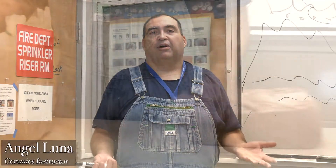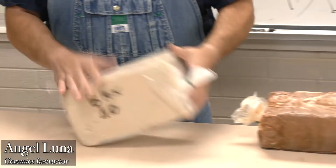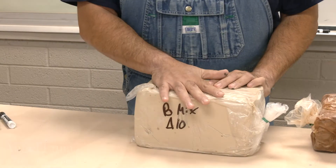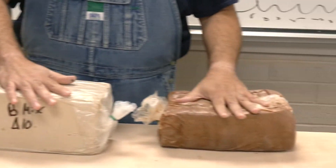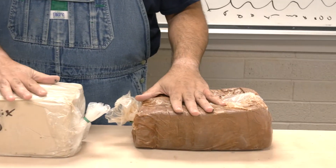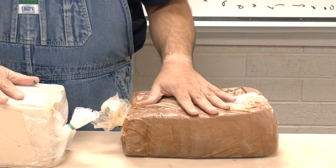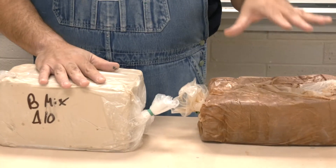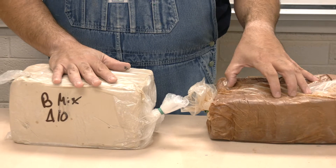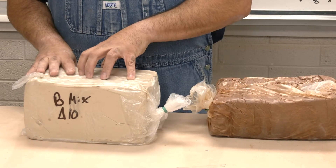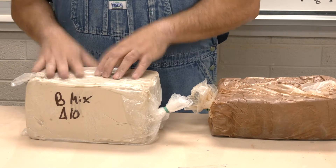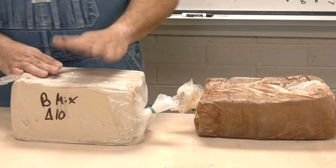Today I'm going to talk about where clay comes from. This B-Mix is a white clay and Amador is a darker clay, and it's based on what materials are in it. I'm going to talk about the differences between them and why one's easier for hand building and one's usually nicer — or trickier — for some people on the wheel.